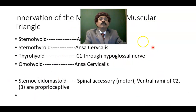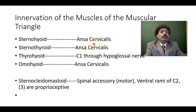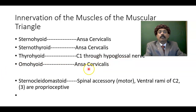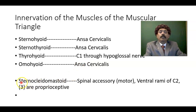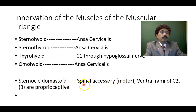What is the nerve supply of the muscles of the muscular triangle? The sternohyoid is innervated by the ansa cervicalis; the sternothyroid by the ansa cervicalis; the thyrohyoid by C1 through the hypoglossal nerve; the omohyoid by the ansa cervicalis — the superior belly by the superior root of the ansa cervicalis, and the inferior belly by the ansa cervicalis. The sternocleidomastoid muscle, which forms a boundary of the muscular triangle, has motor innervation by the spinal accessory nerve, and the ventral rami of C2 and C3 are for proprioception.